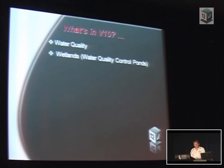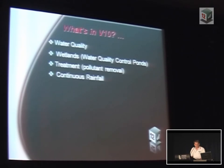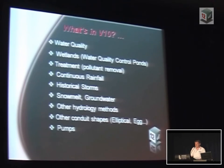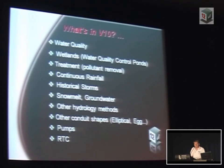What's coming up in version 10? Water quality for sure — once we have water quality we can do wetlands, water quality control plumes, and treatment with pollutant removal. If we're going into that, we obviously need continuous modelling and the ability to model multiple events. We'll probably add snowmelt for our New Zealand colleagues, and other hydrology methods as required since every region has their own methods. We'll also be getting into sewer design, which means we'll need the unusual shapes used in sewers — elliptical, egg-shaped, horseshoe, basket handle, arches. Pumps will probably be an essential part of the sewer model, perhaps with real pump control.